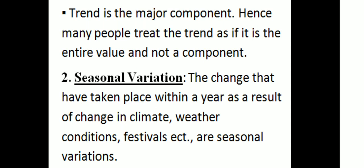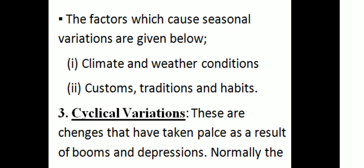Second one: seasonal variation. The changes that have taken place within a year as a result of change in climate, weather conditions, festivals, etc. Seasonal variations take place within a year. Factors causing seasonal variation include climate and weather conditions, and customs, traditions, and habits.